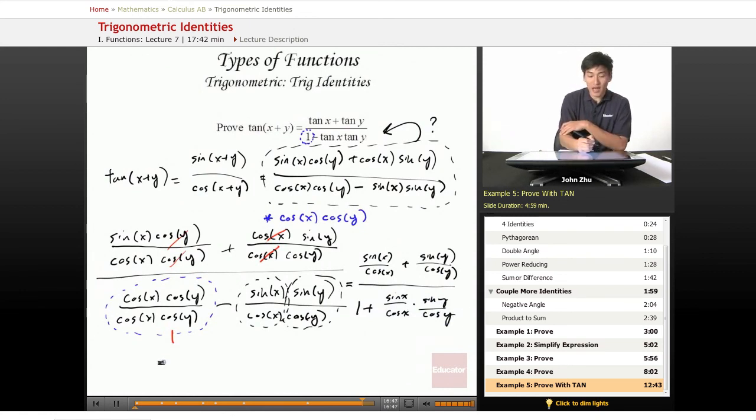And noting that tangent of something equals sine of that something over cosine of something, we can reduce all of these terms down to tangents. So we know that sine of x over cosine of x equals tangent of x plus tangent of y over 1 plus...